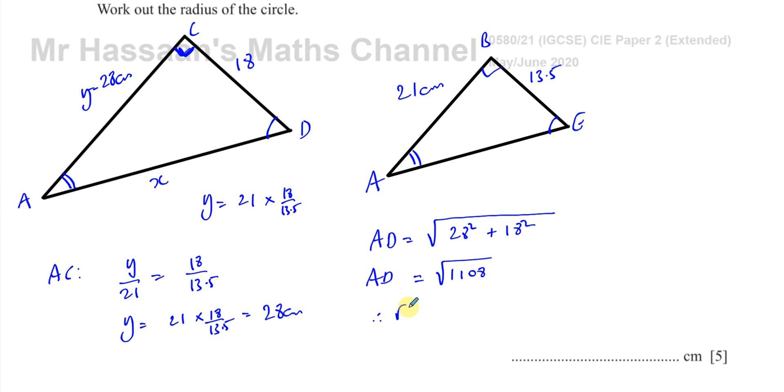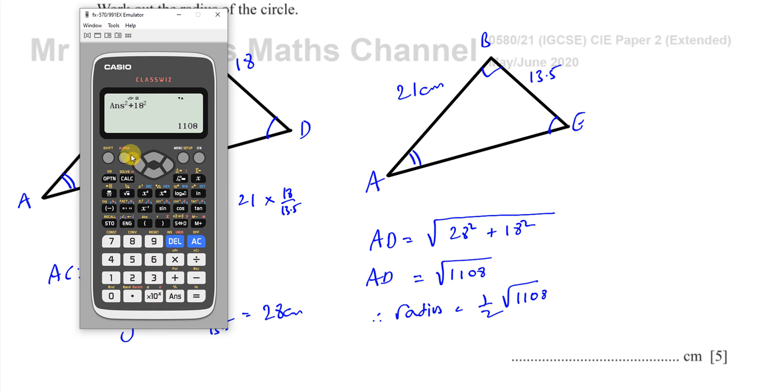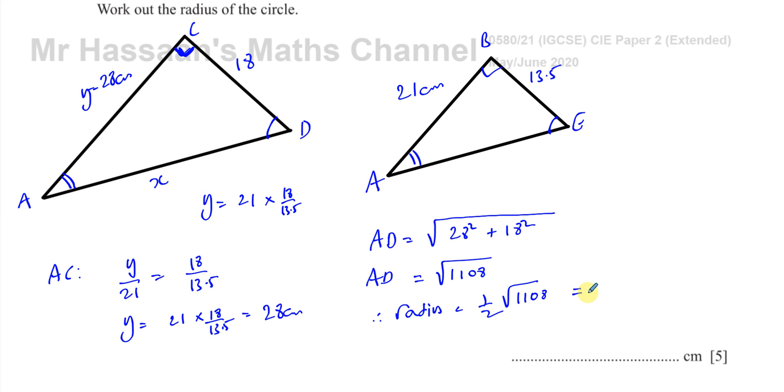So we can say that, therefore, the radius. The radius is going to be a half times the square root of 1,108. This answer that we have here. Which was 28 squared plus 18 squared. Just make sure. Yep. So the square root of the answer. And we're going to multiply that by a half. So we end up with the square root of 277. That's going to be the square root of 277.